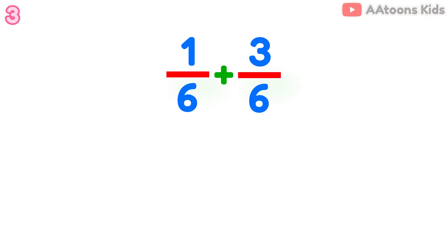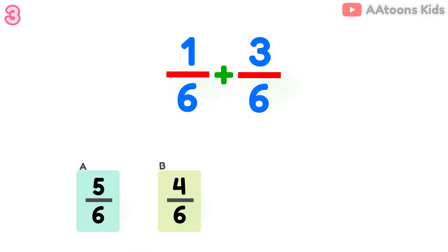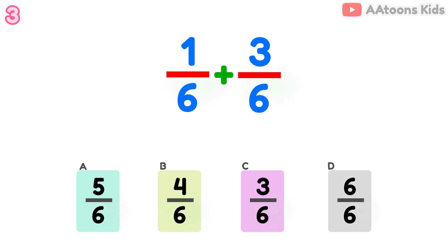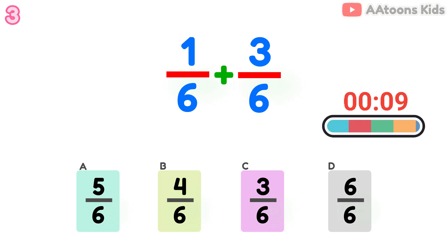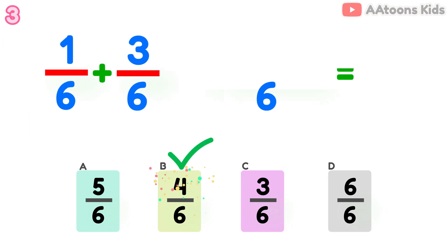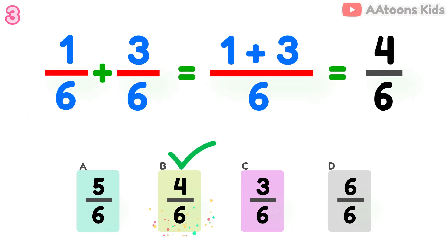Add the fractions: 1 over 6 plus 3 over 6. The answer is 4 over 6.